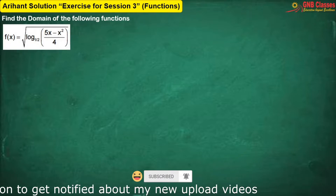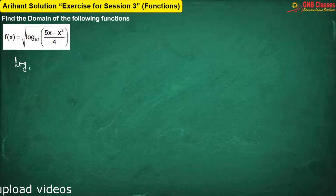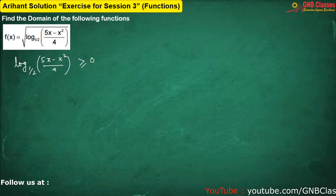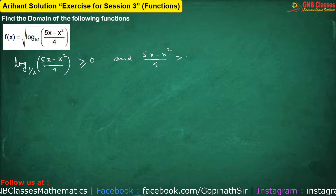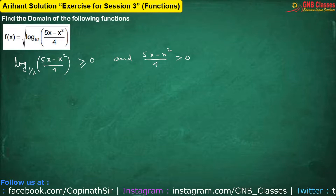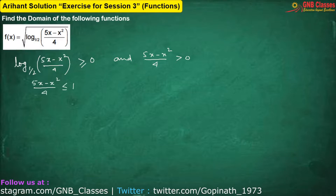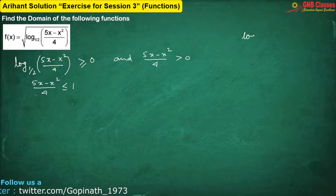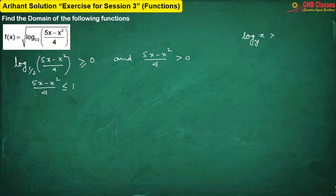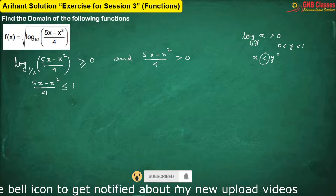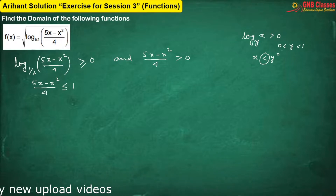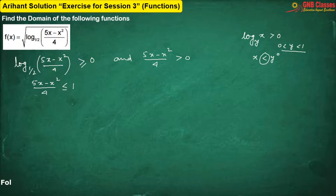Here, to define the function, under the root sign we are having log base one-half. This expression has to be greater than or equal to 0, and (5x minus x squared) divided by 4, which is inside the log, has to be greater than 0. From the first one, the sign gets changed because the rule is: log x base y, if it is greater than 0 and y is lying between 0 and 1, then x will be less than y to the power 0. This sign will get changed when the base lies between 0 and 1.